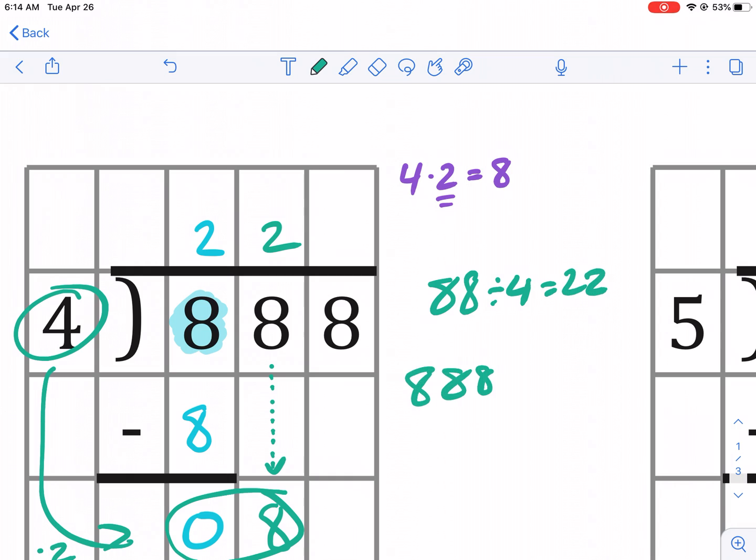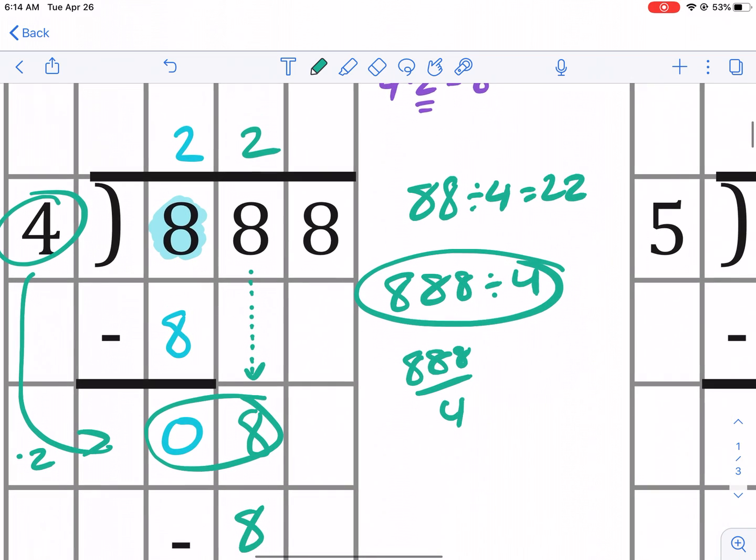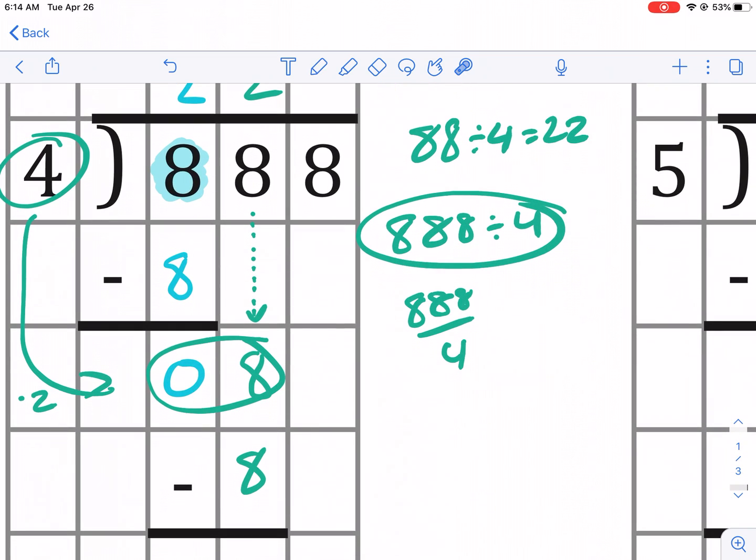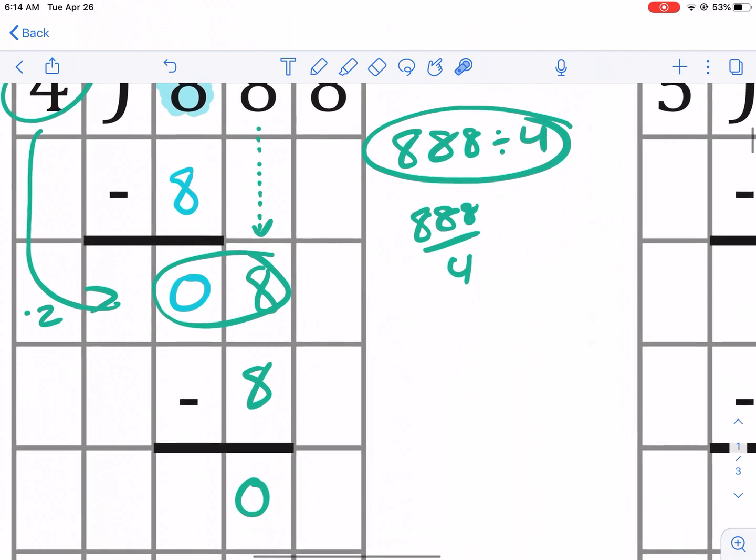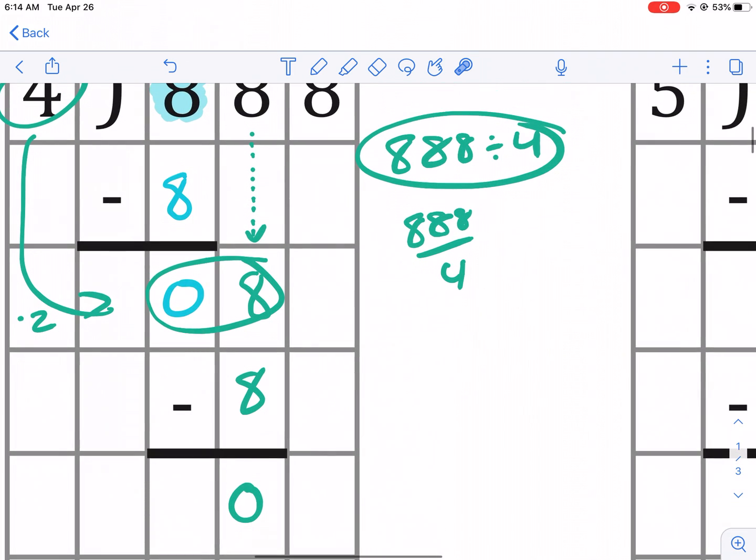So if we just do 4 times 22, that would give us 88 or 88 divided by 4 would be 22, but that's not the number. The number is 888 divided by 4 and that's another way to write this by the way. We have obviously the little house. The house is this thing right here. That's a way to indicate division or you can write it like this. This is all saying the same thing. 888 divided by 4, two different ways.